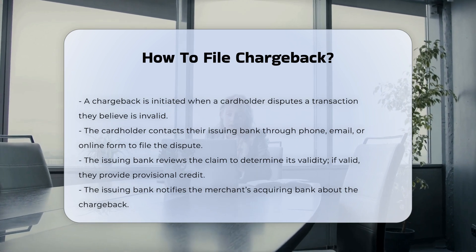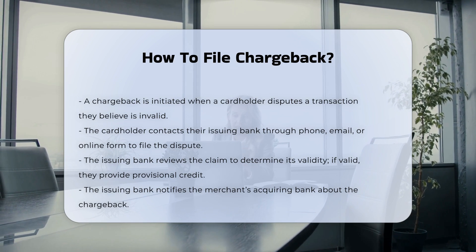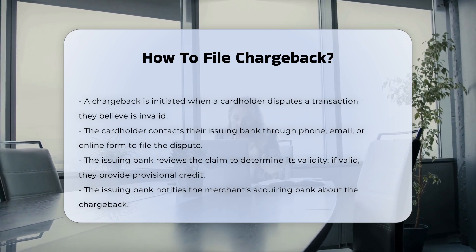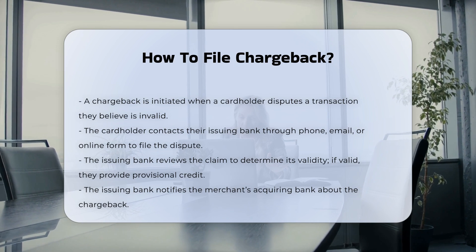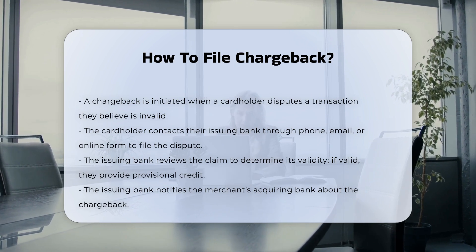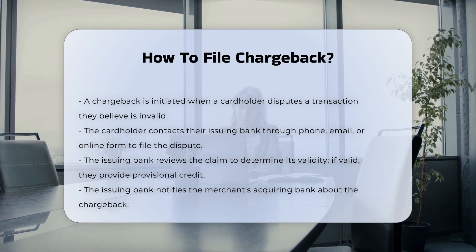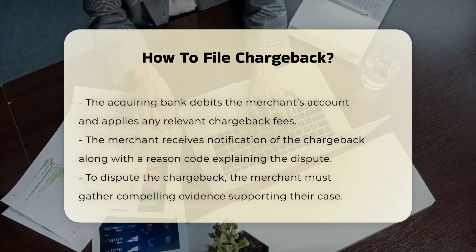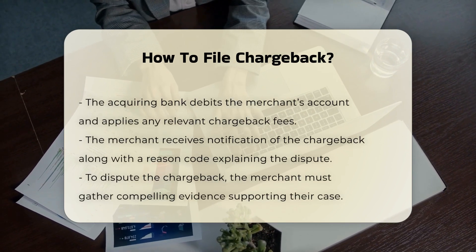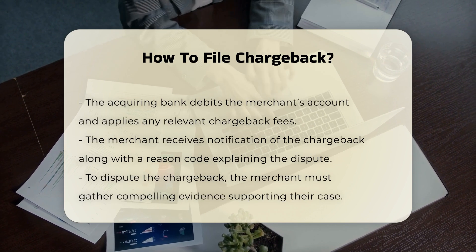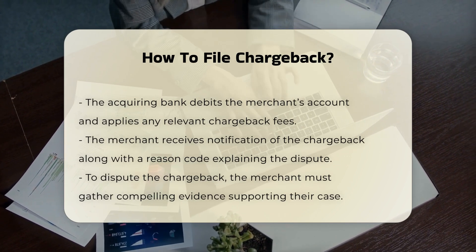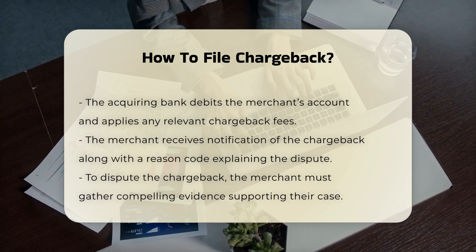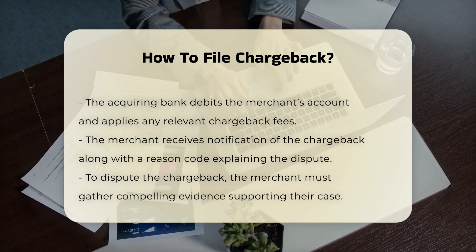The issuing bank reviews the cardholder's claim to determine if it constitutes a valid reason for a chargeback. If the claim is valid, the bank will typically grant a provisional credit to the cardholder equal to the disputed transaction amount. The issuing bank notifies the merchant's acquiring bank about the chargeback. The acquiring bank then debits the merchant's account and charges any applicable chargeback fees.